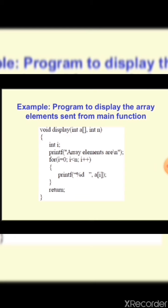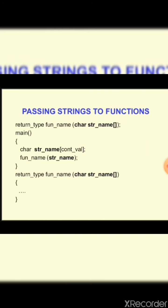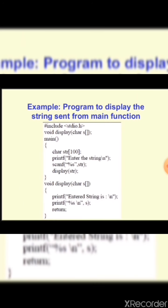So, to summarize: always pass the array name with empty square brackets, then a comma, then the size of the elements. Now we'll see how to send a string to a function. A string is again a kind of array, but the data type is character — it's a collection of characters. While sending, we give the function name with just the string name and no size, because a string always ends with '\0'.